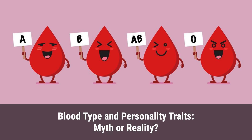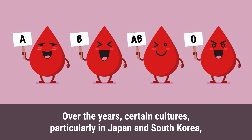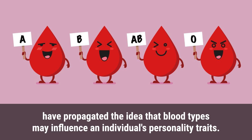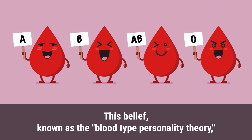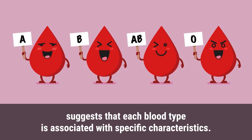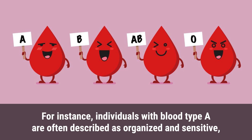Over the years, certain cultures — particularly in Japan and South Korea — have propagated the idea that blood types may influence an individual's personality traits. This belief, known as the blood type personality theory, suggests that each blood type is associated with specific characteristics. For instance, individuals with blood type A are often described as organized and sensitive.